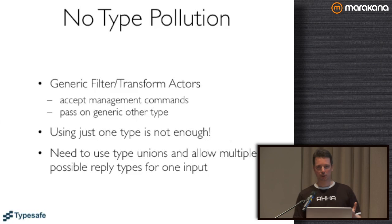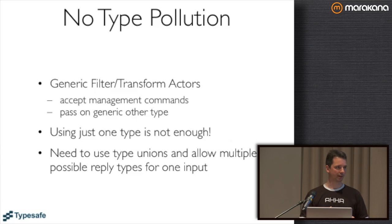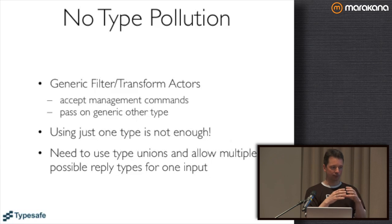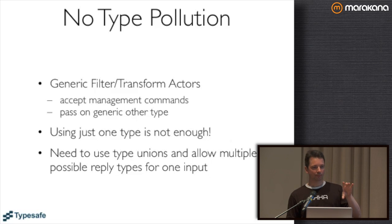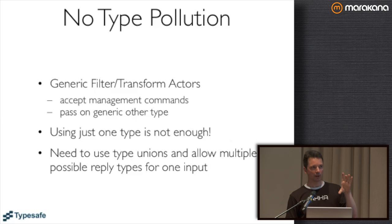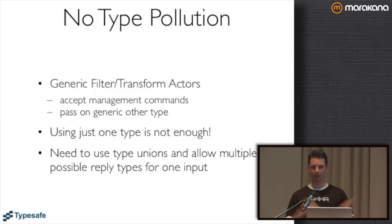If you have actors which wrap other actors - one example would be the reliable proxy pattern which is in Akka itself, or you have a message throttler. You have some actor which you give a target actor ref, and this actor takes the message stream which would go there and transforms it in some way - either by delaying, by dropping messages or by transforming the messages. This outer actor needs to process two types of messages: the real business ones and some management channel. These types are in general not related at all - they are written by different people, possibly in completely different places.